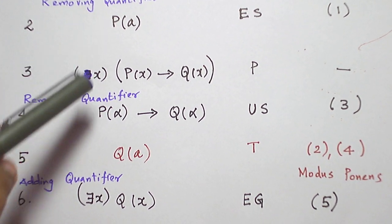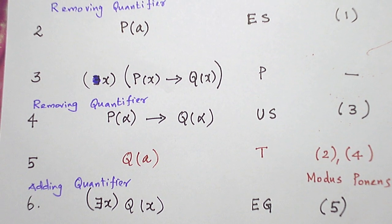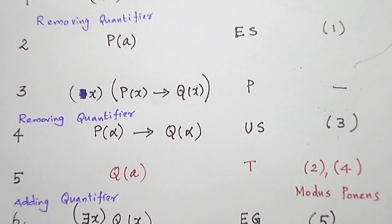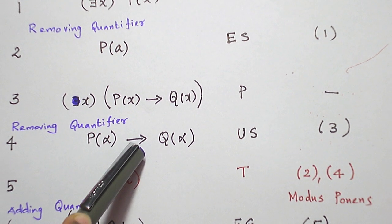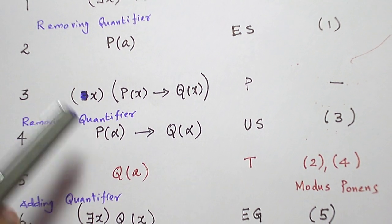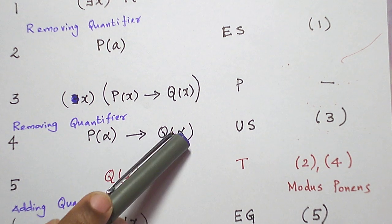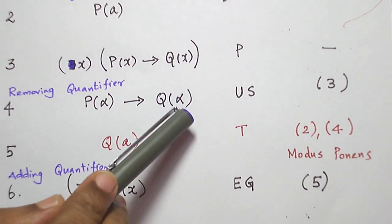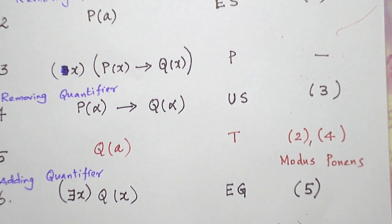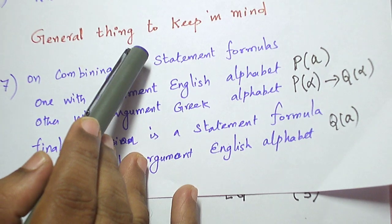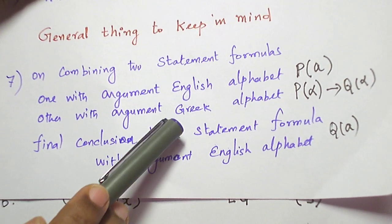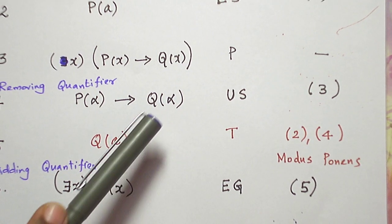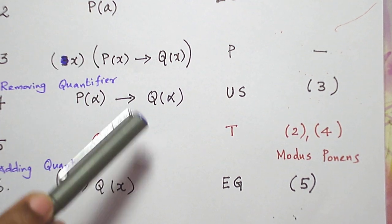Now I am going to combine the two statements: P(a) and P(α) → Q(α). By this time you should be fluent in applying the rules. Here we have a conditional statement, so we apply modus ponens or modus tollens. When the left-hand side comes separately, we apply modus ponens, and we get the right-hand side as the conclusion, which is Q. Regarding the argument — when we have one statement with an English letter and one with a Greek letter, the conclusion is dominated by the English alphabet. So the conclusion is Q(a).